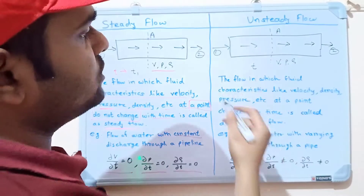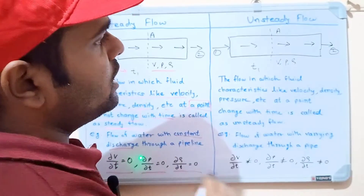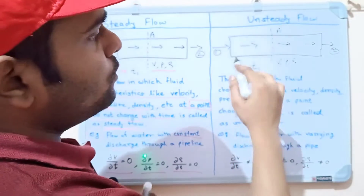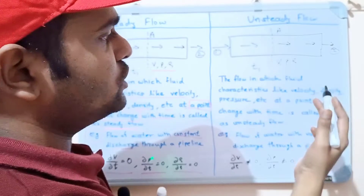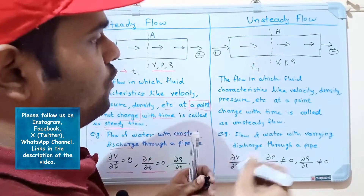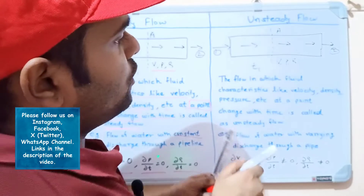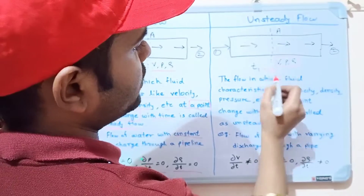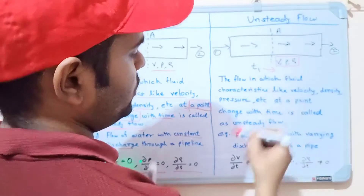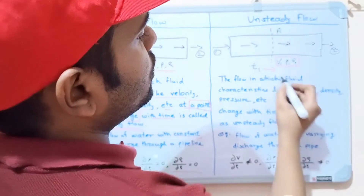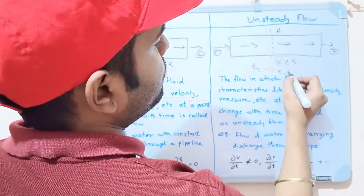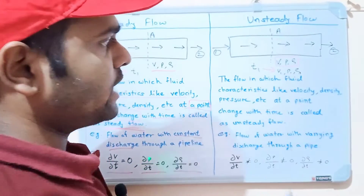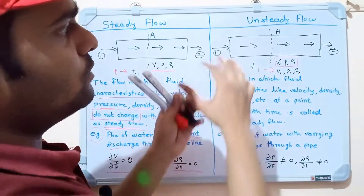When time changes — suppose now time is t1 — in the case of unsteady flow the fluid characteristics will also change with time. At time t1, the fluid characteristics will now be V1, P1, and rho1. So in this case the fluid characteristics have changed.